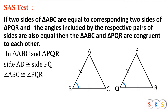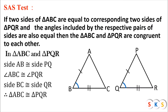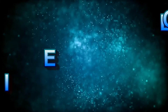Side BC is congruent to side QR. Therefore, triangle ABC is congruent to triangle PQR. You can see that two sides of both the triangles are congruent, as well as the angle between those equal sides of the two triangles are also equal. Hence triangle ABC and triangle PQR are congruent by the SAS Test.